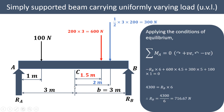Now we take moments about point A. Summation of moments about A equals zero, clockwise positive and anticlockwise negative. RB produces an anticlockwise moment, so it is minus RB into 6. The 600 Newton load produces a clockwise moment: 600 into 4.5 (that is 1.5 plus 3). The 300 Newton load produces a clockwise moment: 300 into 5 (that is 3 plus 2). The 100 Newton force also produces a clockwise moment: 100 into 1. Solving gives RB equal to 4300 divided by 6, that is 716.67 Newton.